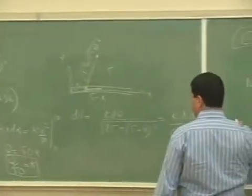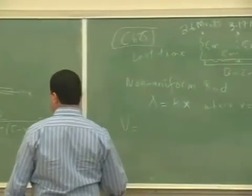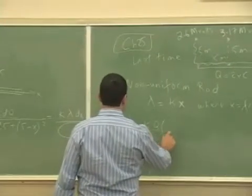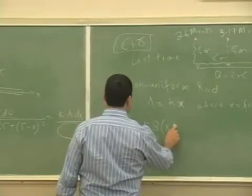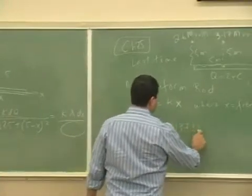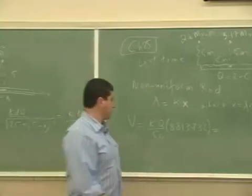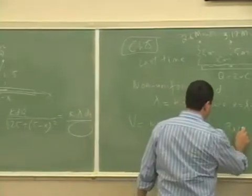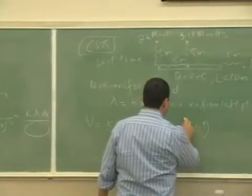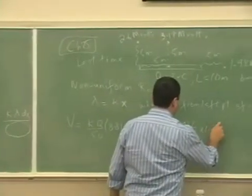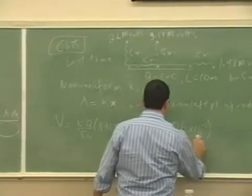I can put that into that kappa and get rid of kappa. So V is equal to k Q divided by 50 times that 8.813736. The k now I can put 9 times 10 to the ninth, and I could put the Q which is two microcoulombs, divided by 50.